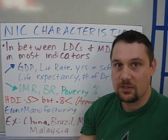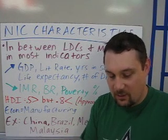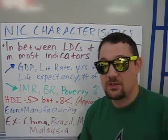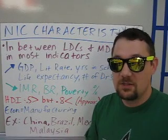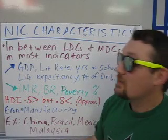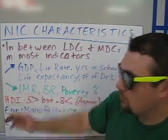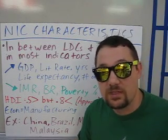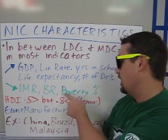Now let's look at the characteristics of newly industrialized countries, or NICs. They are in between LDCs and MDCs in most indicators. If an NIC were a person, that person would be a teenager — kind of the in-between stage. They have a rising GDP, a rising literacy rate, number of years in school, life expectancy, and number of doctors — notice the trend is moving upward, because they are improving in these areas. They're also lowering their infant mortality rate, meaning their medical care is improving, and lowering their birth rates, because when you don't have to farm for a living, people tend to have fewer children. Their poverty rate is also steadily going down.